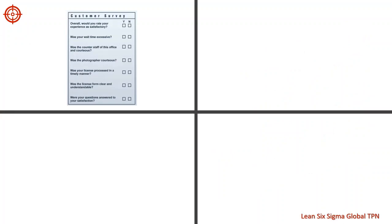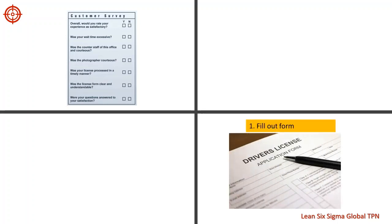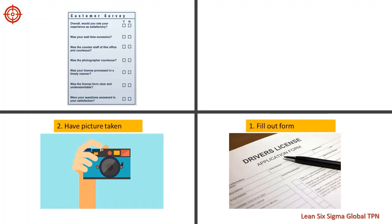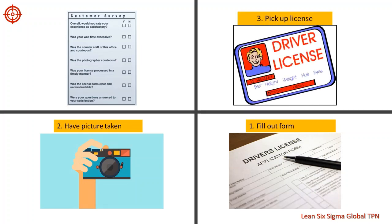For example, consider the customer satisfaction at a facility that dispenses driver's licenses. At this particular facility, customers receive their licenses in a three-step process: first they fill out a form, then they have their picture taken, and finally they pick up their license once it has printed. The office manager is interested in customer satisfaction with the current process, so he gives the customers a survey at the end of the process.